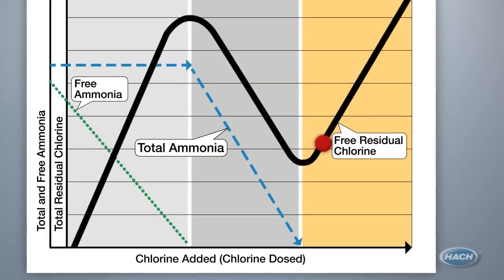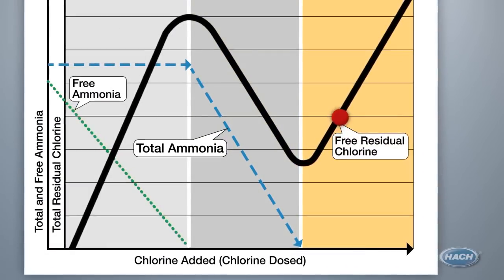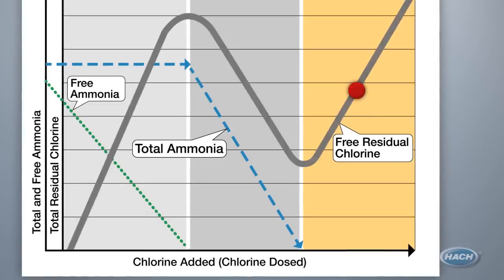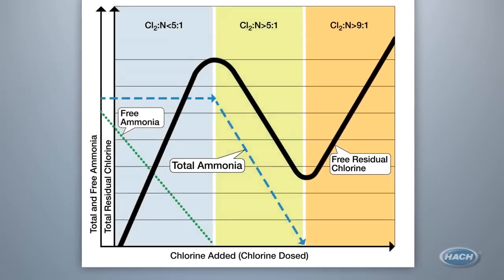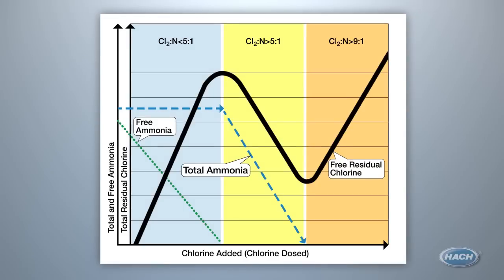In zone three, you will see no ammonia and only chlorine, and your free and total chlorine values should be very similar or match. If you know the key parameters to look for in each section, it is easy to determine where you are on the chloramination curve.